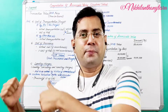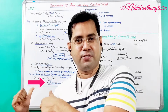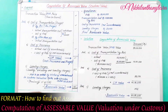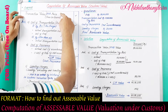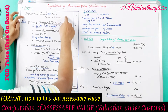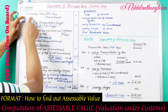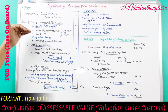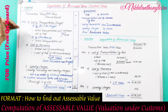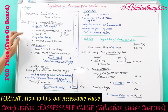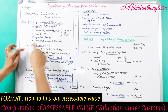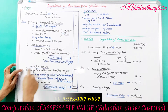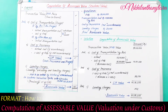Let's start the computation of accessible value. To calculate the accessible value, we need to start with FOB price, that is free on board, which is also known as transaction value. Then we need to add: A) cost of transportation or freight, B) cost of insurance, and C) landing charges.